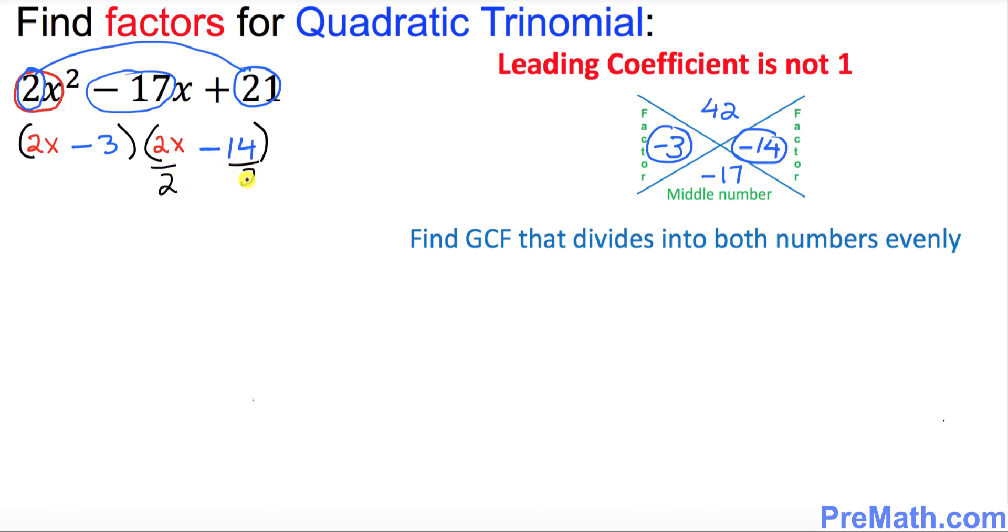So I want you to divide both numbers by 2. So this second parentheses is going to simply become, when you divide it by 2, x minus 7, and the first parentheses, just leave it alone since there's nothing in common. So thus, 2x minus 3 and x minus 7 are our factors.